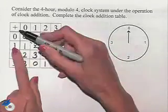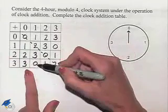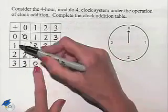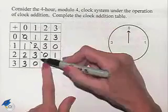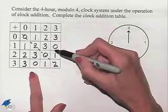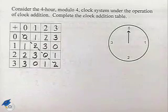And 0 added to 3 is 0. We can see the symmetry across this diagonal. Then we're going to have commutativity. So, we can verify commutativity by looking for the symmetry.